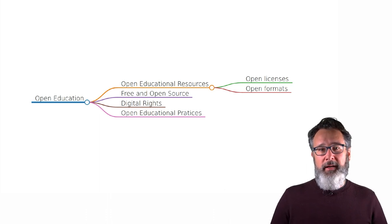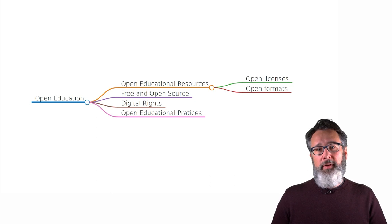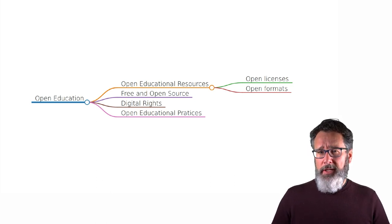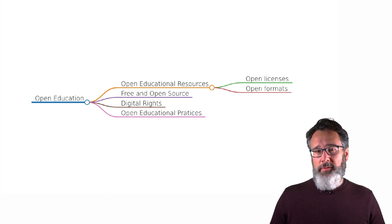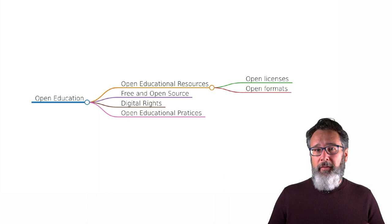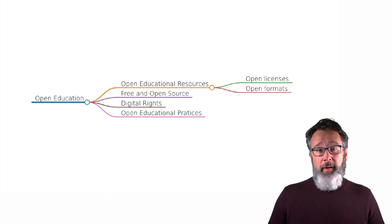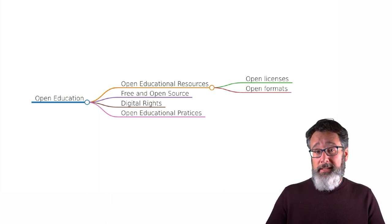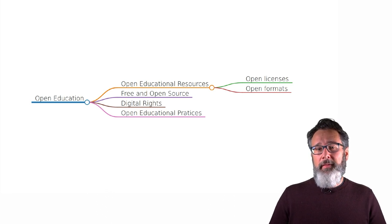The second aspect is open formats, which are the technical side of openness for open educational resources. When you create a file, an educational resource, one of the important things to think about is what file format you're using. If you create it in a format that's not open, it's going to make it much harder for other people to see the file, but perhaps also to modify, revise, and remix that file to add their own contributions.